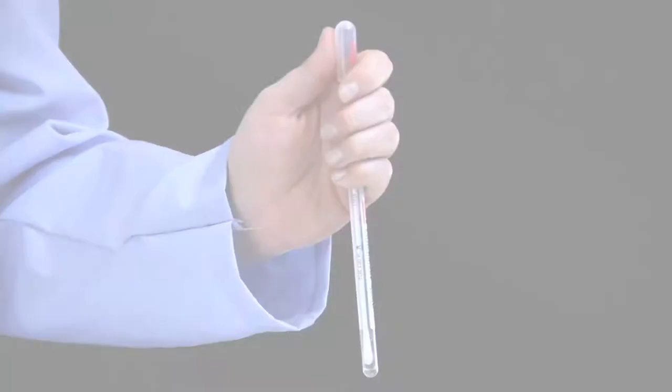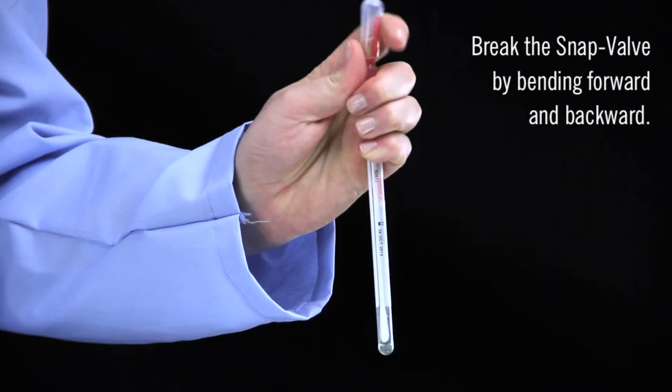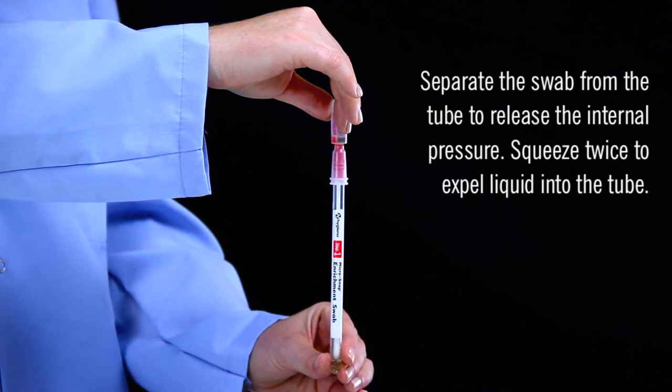Hold the swab tube firmly and use the thumb and forefinger to break the snap valve by bending the bulb forward and backward to release the internal pressure and squeeze the bulb twice to expel liquid into the tube. A small amount of enrichment media will stay in the bulb. This is okay.